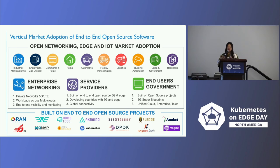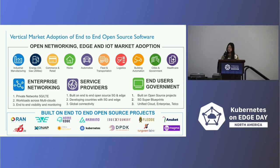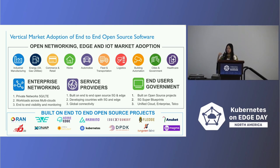This shows the vertical market adoption of end-to-end open source software — open networking, edge, and IoT market adoptions across industry, manufacturing, energy, home, automotive, and more. Underneath are three pillars: enterprise networking, service providers, and end-user government. End-user government is very important — we really encourage the user application group to participate in open source.